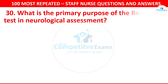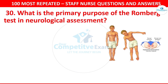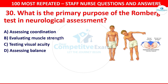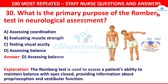Question number 30: What is the primary purpose of the Romberg test in neurological assessment? Your options are assessing coordination, evaluating muscle strength, testing visual acuity, or assessing balance. The correct answer is assessing balance. The Romberg test is used to assess a patient's ability to maintain balance with eyes closed, providing information about proprioception and vestibular function.